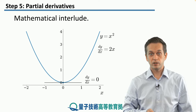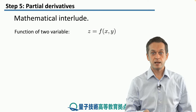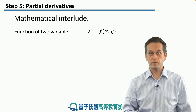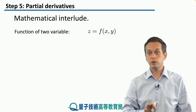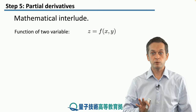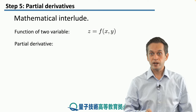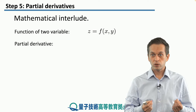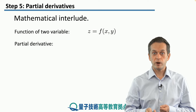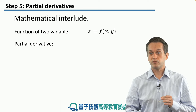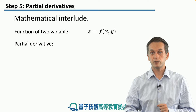Now what happens if we have a function of two variables? We can write it as z is equal to a function of x and y. We will see examples of this constantly in our module, and those functions will not only depend on two variables but on three, four, and more. When we want to look at the rate of change, there are two coordinates we can vary: x and y.